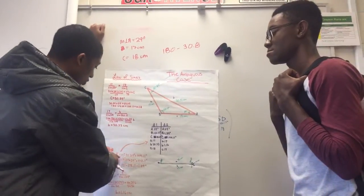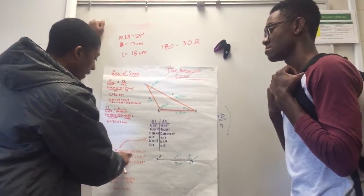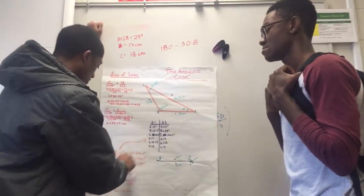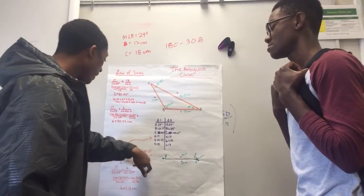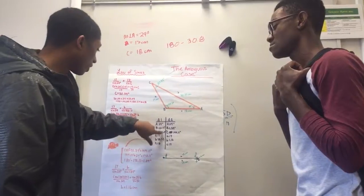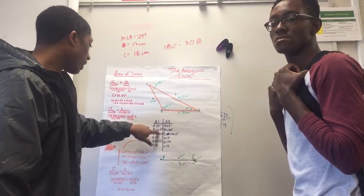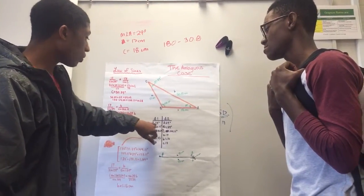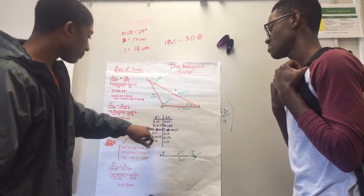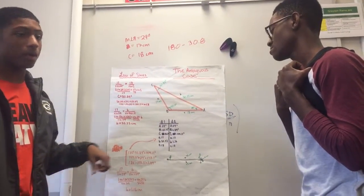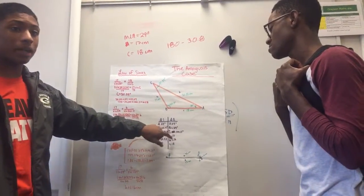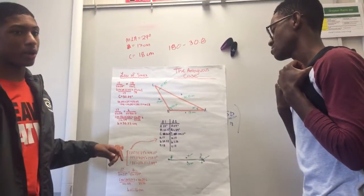So now, you do 180 degrees minus 30.89, which is the angle we solved for here. And that will give you 149.11. So now, you add this to the 29 degrees you found before. And that will give you 149.11. And as this is less than 180 degrees, we know we have a second triangle to solve.